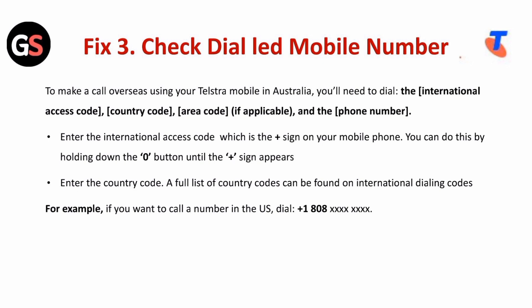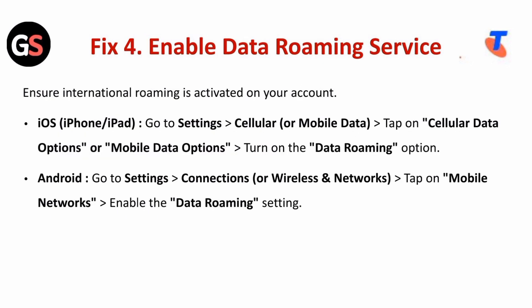Fix three is to check the dialing format. To make a call overseas using your Telstra mobile, you will need to dial the access code, country code, area code (if applicable), and the phone number. Enter the international access code by pressing and holding the zero button until the plus sign appears. Then enter the country code — a full list of country codes can be found on the international dialing codes page. For example, to call a number in the US, dial +1 followed by the area code and number.